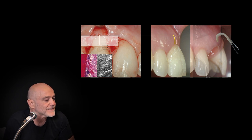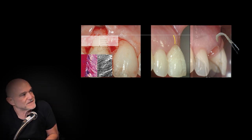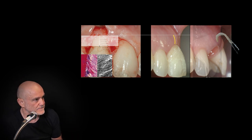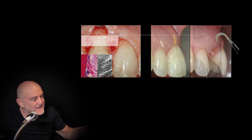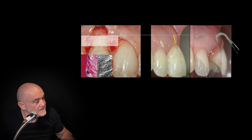By definition, the graft must already be more coronal than the pre-existing margin, so we will leave the graft exposed. And how do I extend the graft to the base of the papillae if I haven't opened a flap?